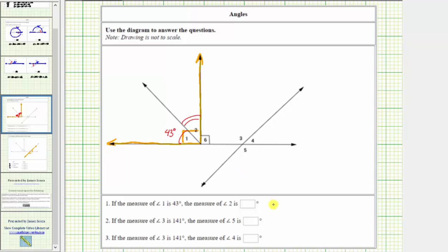Which means the measure of angle 2 must equal 90 degrees minus 43 degrees, which is equal to 47 degrees. So we enter 47.